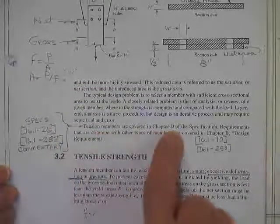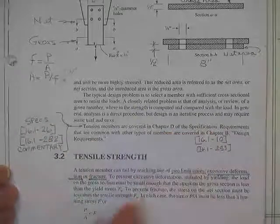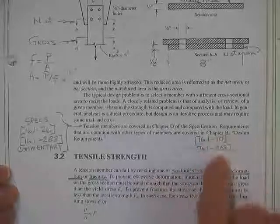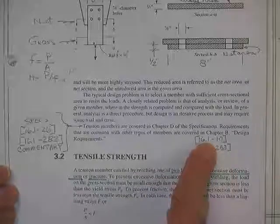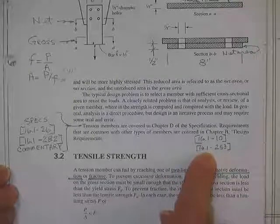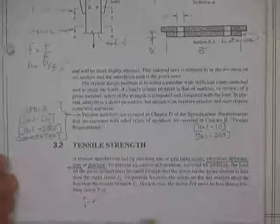Again, design. Our tension members are covered in section D. Here are your specs and your commentary where you'll find that chapter D of the specs. Here's chapter B. This is the specification. And this is the commentary to the specification. Same way here, specs and commentary.